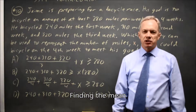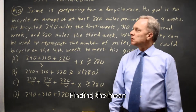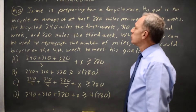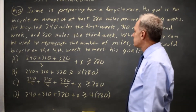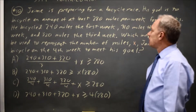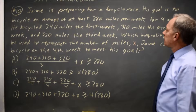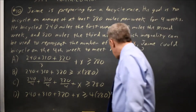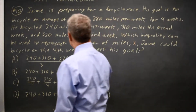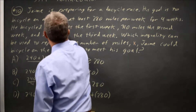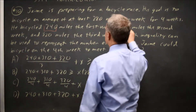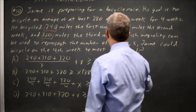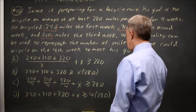This is non-calculator question number 10. College Board gives us a word problem about preparing for a bicycle race. Jamie wants to average 280 miles over four weeks. He bicycles 240 the first week, 310 the second week, 320 the third week, and X miles the fourth week.